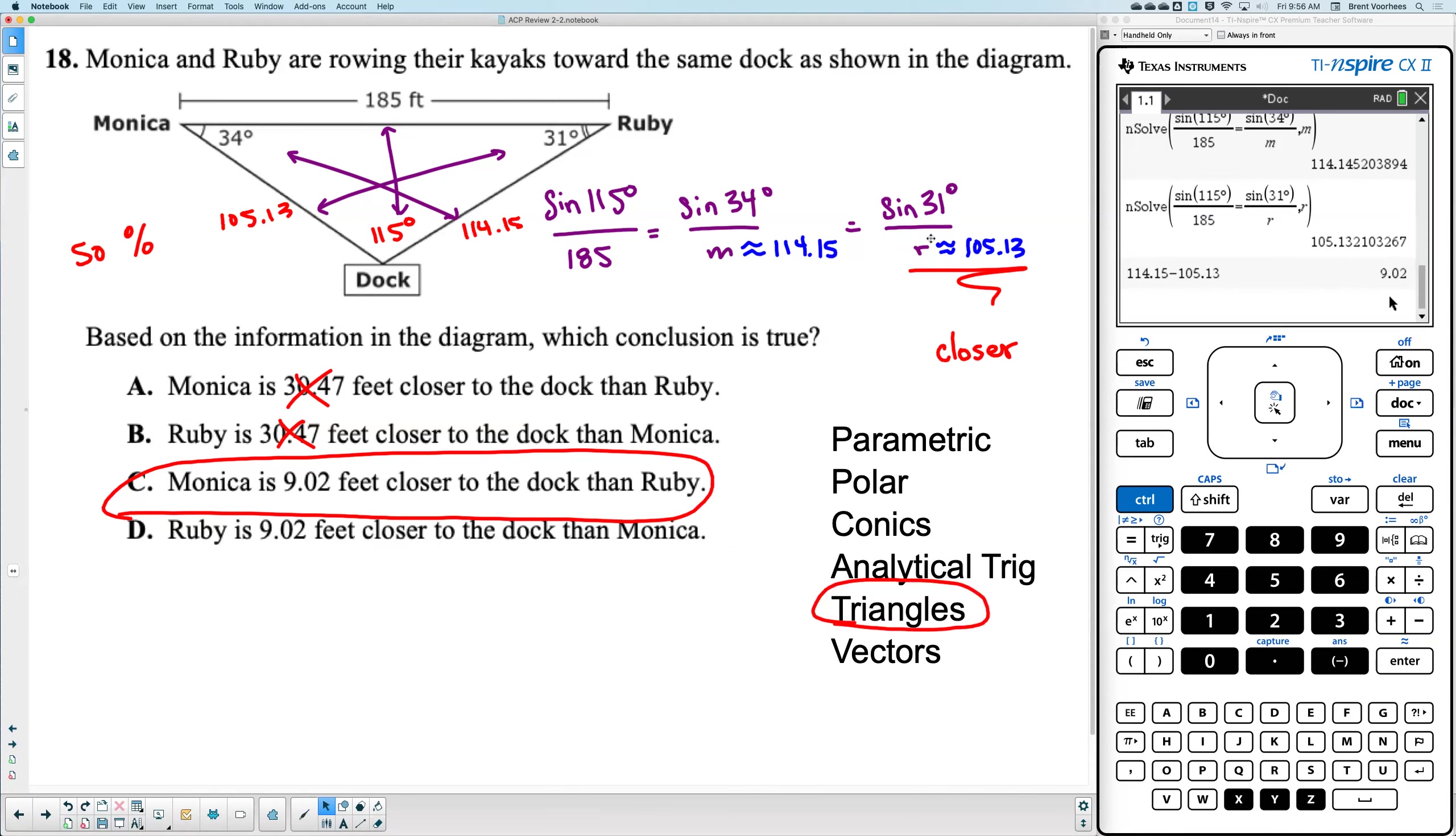So, that's what confused me is I use the letters and I was just saying, okay, this is Ruby. This is the closer number. However, that's not Ruby's distance. That is actually the distance of Monica to the dock. Interesting. Glad we looked at that. Okay. So, that was number 18.